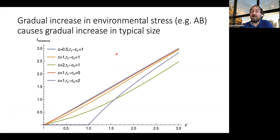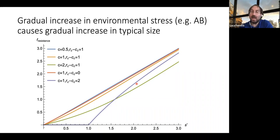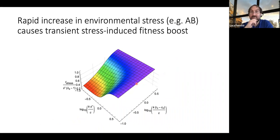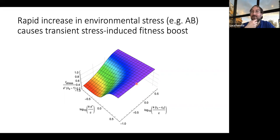One can ask what happens when we increase environmental stress — for example, antimicrobial concentration. If this increase is gradual, the size of the plasmids increases gradually, as plasmids tend to acquire genes that confer antimicrobial resistance. However, if the increase is very rapid, there is a mismatch between the evolutionary equilibrium and the state where the plasmid finds itself. The insertion load is lower than expected, and essentially the plasmid has a transient stress-induced fitness boost. So if environmental stress suddenly increases, paradoxically, plasmids tend to be at higher relative fitness and therefore tend to spread more widely.